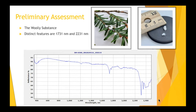Looking below, there are the results — the spectra from just the woolly material. What can be seen from the scan are definitely some distinguishing features pertaining to the spectral fingerprint of the woolly substance. Some potentially key information is around the 1731 nanometer mark and roughly the 2351 nanometer mark, and in spectroscopy these features are usually an indication of hydrocarbons, which would make sense since this is organic material.